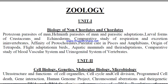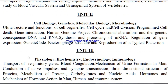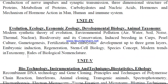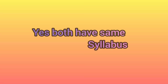The SSB syllabus of zoology covers: Unit 1 biology of non-cadets and cadets, Unit 2 cell biology, genetics, molecular biology and microbiology, Unit 3 physiology, biochemistry, endocrinology and immunology, Unit 4 evolution, ecology, economic zoology, developmental biology and animal taxonomy, and Unit 5 biotechnology, instrumentation, techniques, biostatistics and ethology. These five units contain all the semesters of the BSc syllabus.